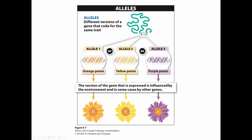Let's look at it from this perspective. We have different flowers — an orange flower, a yellow flower, and a purple flower. If we look at the gene for flower color, we see that there are different versions of that same gene. Allele one is for orange petals, allele two is for yellow petals, and allele three is for purple petals. It's the same type of gene — petal color — but different versions that give us the different colors we see.